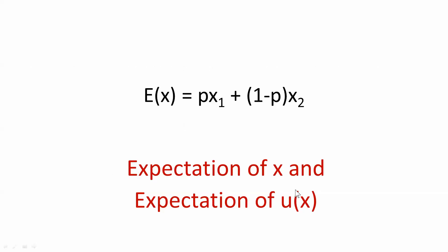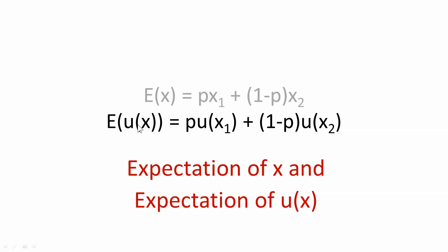Let's do a little bit of the math of expectations. The expected value of a random variable is an average where you weight by the probabilities. So the expectation of x is Px1 plus (1 minus P)x2. U of x, where u is the utility function, is also a random variable, so the expectation of u of x is defined likewise.